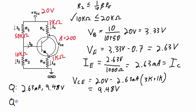With the shortcut method I get an operating point of 2.63 milliamps and 9.48 volts. With the exact calculation method I got 2.52 milliamps and 9.94 volts — about a 4% difference between the two. Considering there's probably that much error in your resistor values and beta anyway, the 4% error is not significant. You're just trying to target the middle of the load line for DC biasing in an amplifier. I hope that clears up your understanding of voltage divider bias circuits, and I'll see you in the next video.